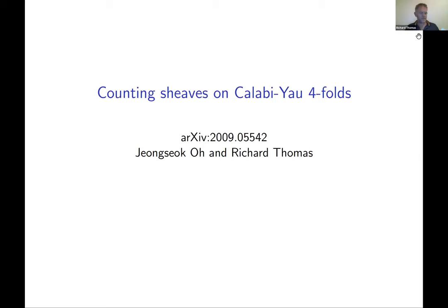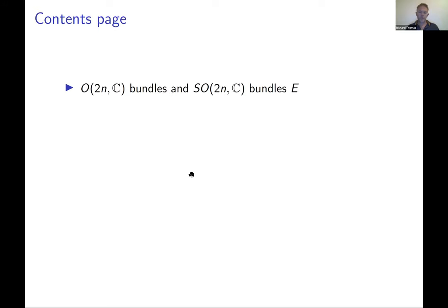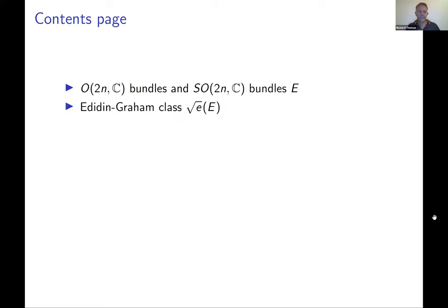This is joint work with Jungsook Oh in Seoul, and it's on the archive, though there are lots of sign errors that will be updated in a week or so. This talk is mainly about characteristic classes for orthogonal bundles — bundles with a quadratic form — and the applications to counting Calabi-Yau fourfolds will come briefly at the end.